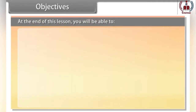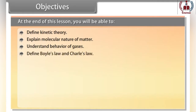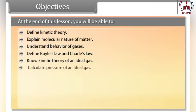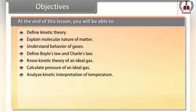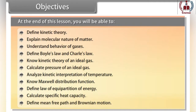Objectives. At the end of this lesson, you will be able to: define kinetic theory; explain the molecular nature of matter; understand the behavior of gases; define Boyle's law and Charles' law; know the kinetic theory of an ideal gas; calculate the pressure of an ideal gas; analyze kinetic interpretation of temperature; know the Maxwell distribution function; define the law of equipartition of energy; calculate specific heat capacity; and define mean free path and Brownian motion.